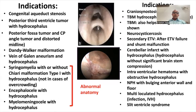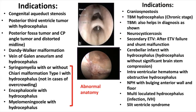ETV associated with congenital malformations may be difficult because of associated anomalies such as large interthalamic adhesions and abnormal third ventricle anatomy. ETV is also indicated in post-infective causes such as TBM, neurocysticercosis, secondary pathology of the posterior fossa, cerebellar infarct, intraventricular hemorrhage, and others.